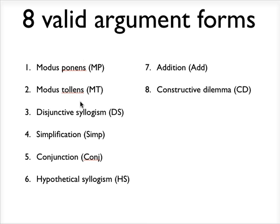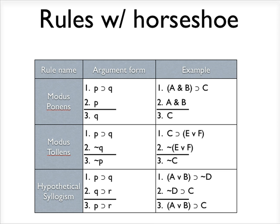So the first two are Latin names, and then all the rest of the argument forms just have these names. And so what I'm going to do is I'm going to go over each of these. I'm going to start with, I've got these little tables here. I'm going to start with rules that utilize the horseshoe. So there are three of these. Modus ponens is one of the rules. Modus tollens is another rule. And hypothetical syllogism is a third rule that utilizes the horseshoe.